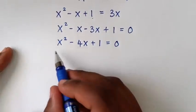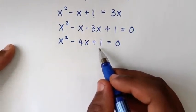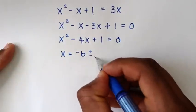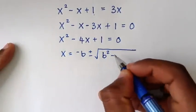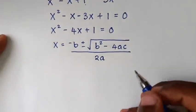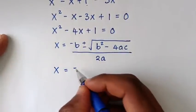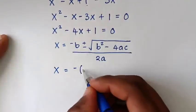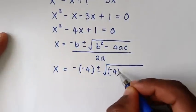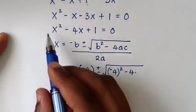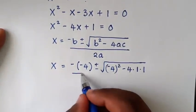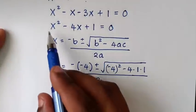We solve this quadratic equation using the quadratic formula: x = (−b ± √(b² − 4ac)) / 2a. Here a = 1, b = −4, c = 1. Substituting: x = (−(−4) ± √((−4)² − 4·1·1)) / (2·1).